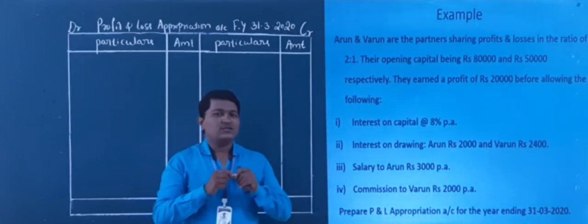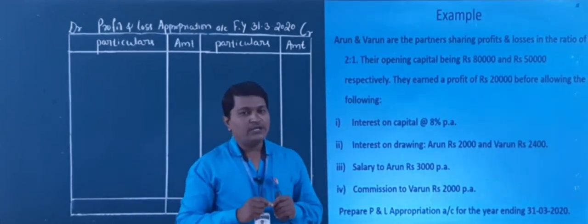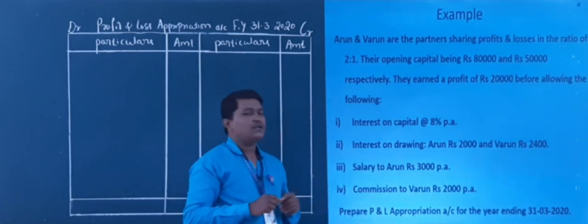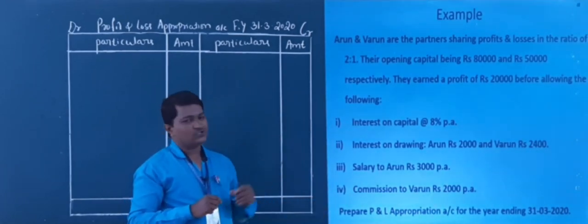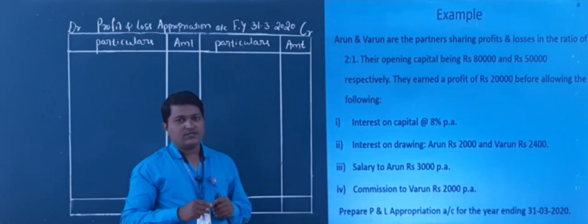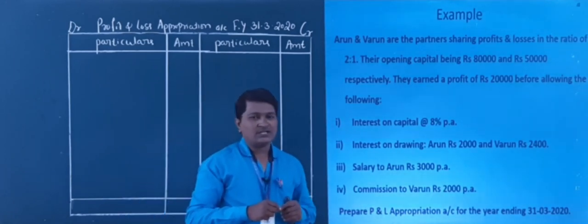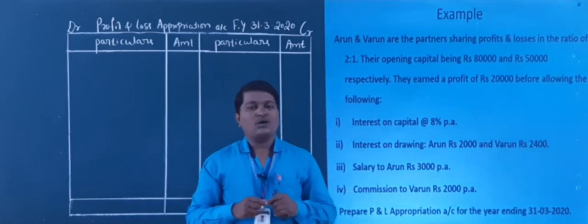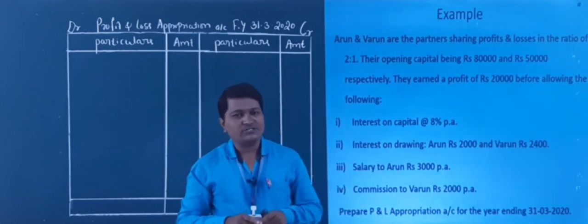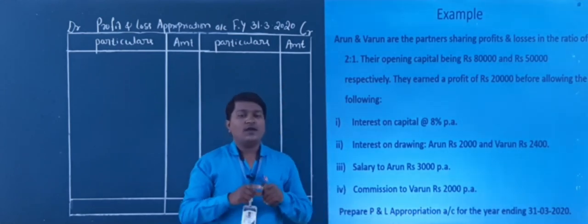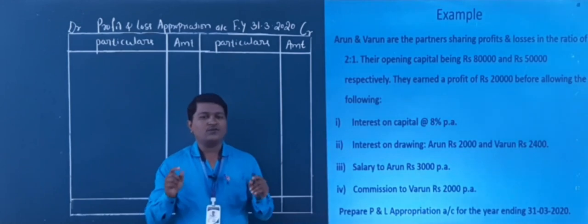Prepare profit and loss appropriation account for the year ending 31st March 2020. This is the question. Now we need to prepare the profit and loss appropriation account. So as you studied in the previous class, what is the format of profit and loss appropriation account?